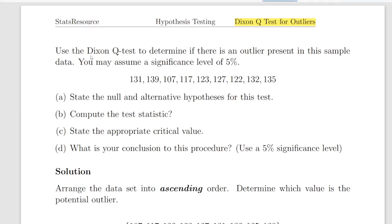Use the Dixon Q test to determine if there's an outlier present in this sample. That's the hypothesis of interest here. We call that the alternative hypothesis when the time comes. You may assume a significance level of 5%. This is an important matter in hypothesis testing. I won't really get into it, but I'll just highlight that fact for further study.